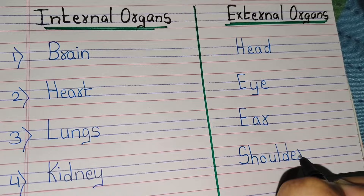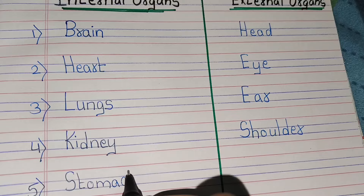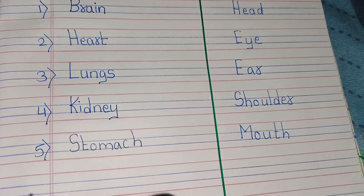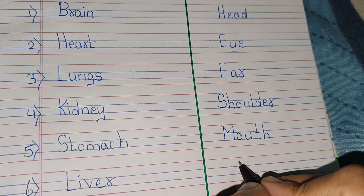Fifth, internal organ name: stomach. And external organ name: mouth. Sixth, internal organ name: liver. External organ name: chest.